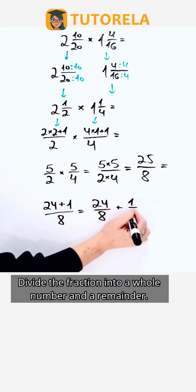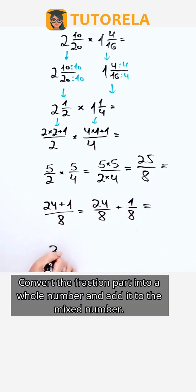Divide the fraction into a whole number and a remainder. Convert the fraction part into a whole number and add it to the mixed number.